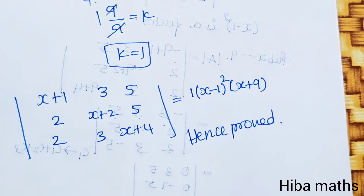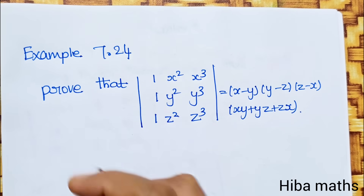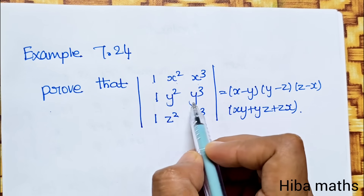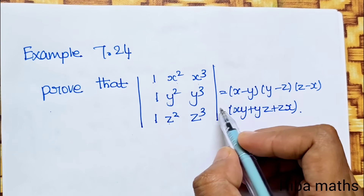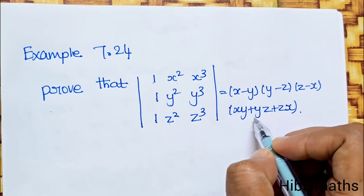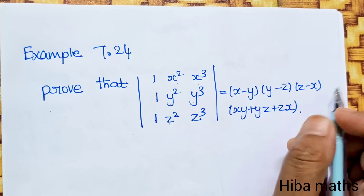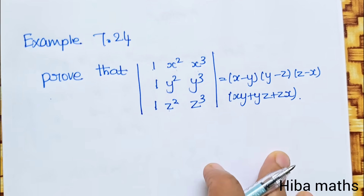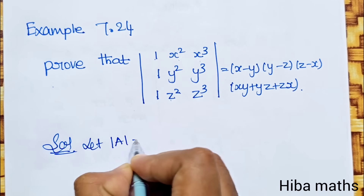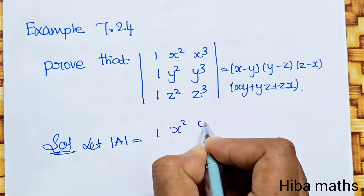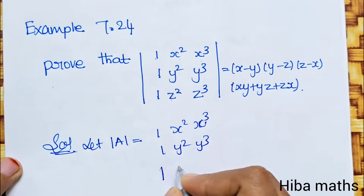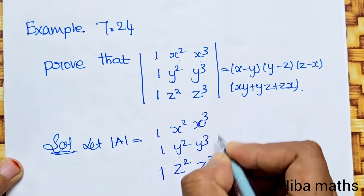Next, let us look at Example 7.24. Prove that the determinant of rows (1, x², x³), (1, y², y³), (1, z², z³) is equal to (x-y)(y-z)(z-x)(xy+yz+zx).